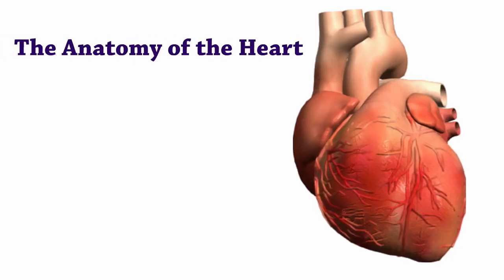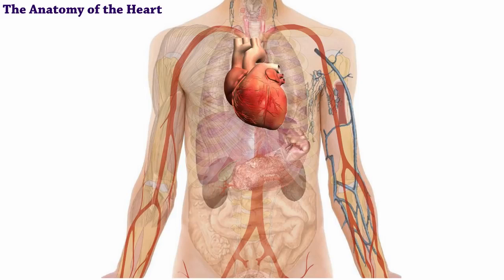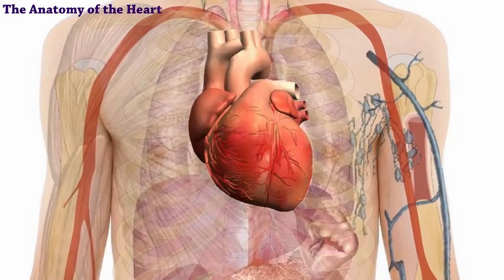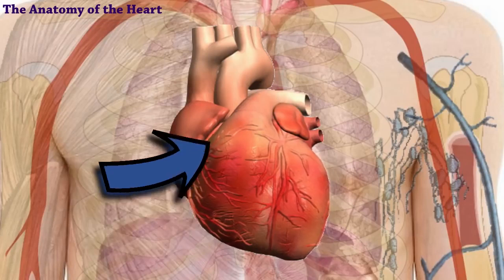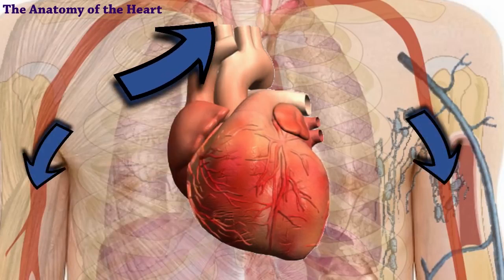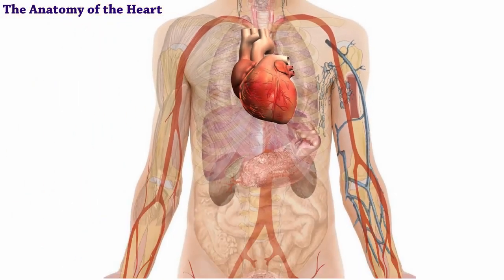Welcome to the anatomy of the heart. Your heart is located in the center of your chest. Its muscular walls contract, which creates your heartbeat and pumps blood throughout your body. As your blood moves around, it delivers oxygen and nutrients to every cell.